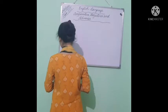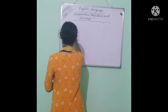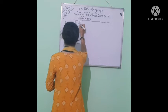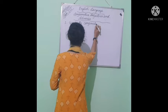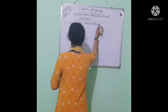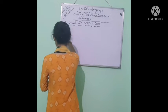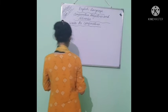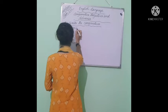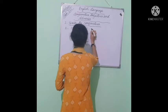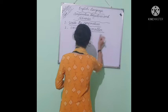Comparative adjectives and adverbs. Number one: write the comparatives. First word: small. The comparative degree of small is smaller — S-M-A-L-L-E-R. Smaller.